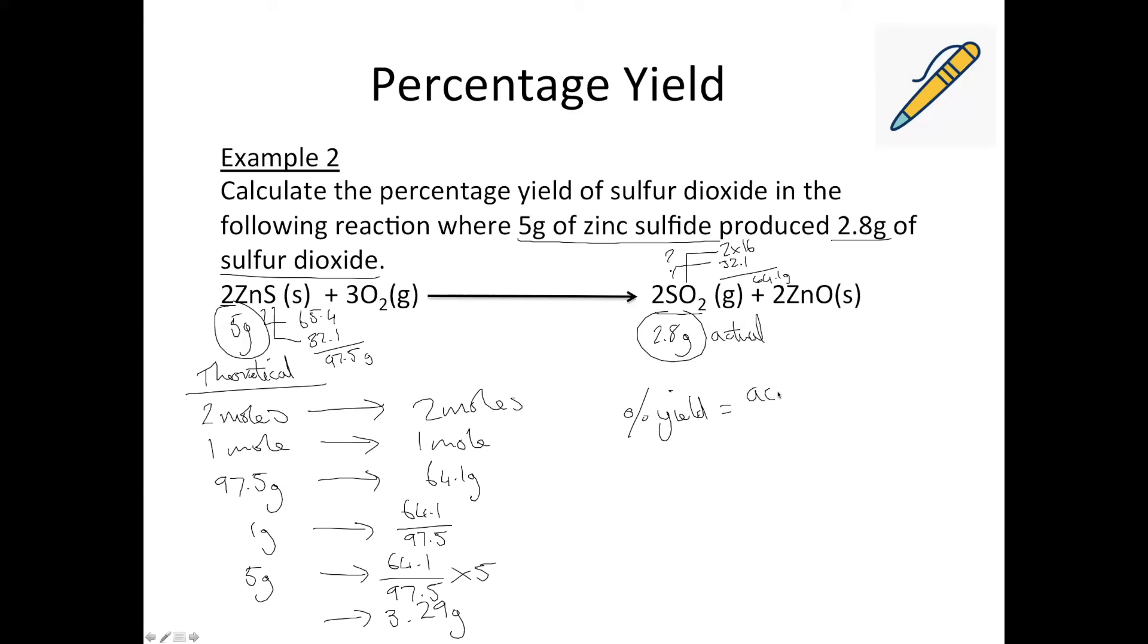So actual over theoretical times by 100. So that's 2.8 over 3.29 times by 100. It's always comforting when the top number is smaller than the bottom, because then you know that you've not ended up with a yield over 100%. So that comes out as 85.1%. And again, you can calculate the theoretical yield by the mole relationship if you wish instead.